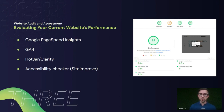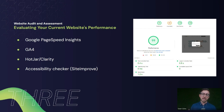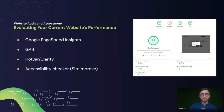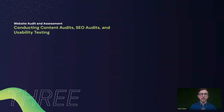From an accessibility perspective, SiteImprove is a tool we use internally. You do get accessibility data through Google PageSpeed Insights, but it's always good to have another opinion. It's a plugin you can add to Chrome that gives you feedback on issues to update so you're covering as many accessibility elements as possible on the website.